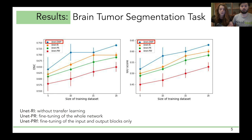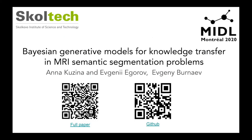To sum up, the conducted experiments show that transferring knowledge using prior distribution boosts the performance as opposed to the conventional transfer learning method. Thank you for your attention. We look forward to seeing you at the poster session.